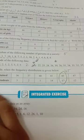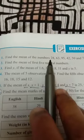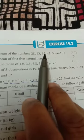Now we will check the exercise question, Exercise 19.3. First question: find the mean of the numbers 28, 63, 95, 42, 50, 76.